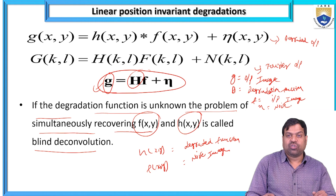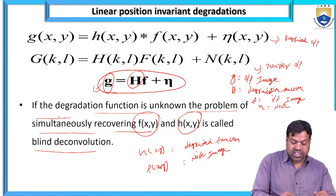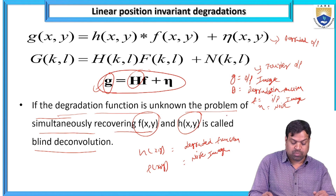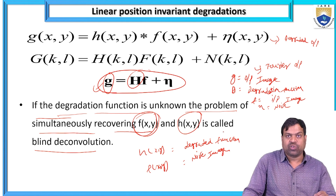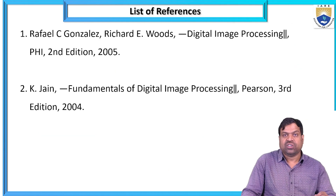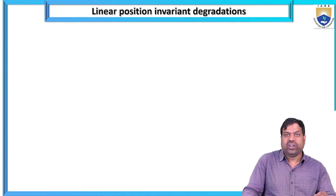In short form: g = H·f + μ. This degradation function, the problem of simultaneous recovery of f(x,y) and h(x,y), is called blind deconvolution. This concludes the topic of linear position invariant degradation.